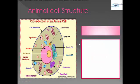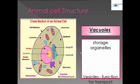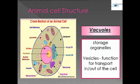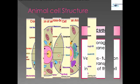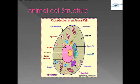The last part of the animal cell structure is the vacuole. The vacuole is the storage organelle and functions for transporting substances in or out of the cell. This covers all the parts of the animal cell structure.